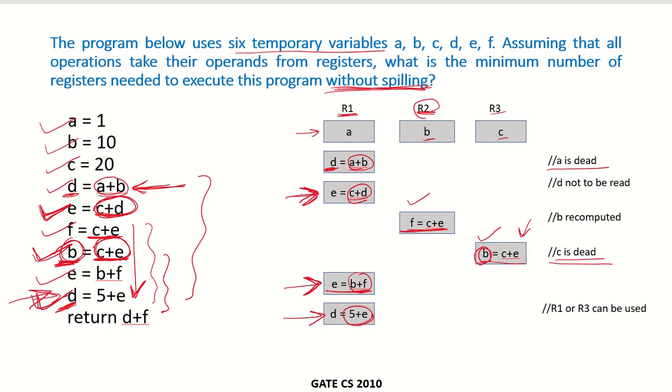The last thing that needs to be done is to add d and f. So d is available in R1, f is available in R2, and we add them up in the ALU and return the value to the memory location or wherever it is required, probably to a calling program.